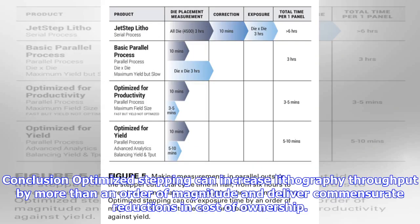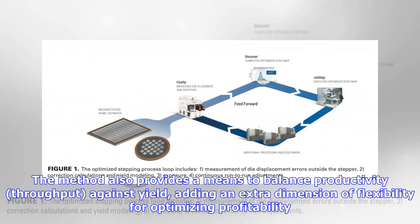Conclusion: optimized stepping can increase lithography throughput by more than an order of magnitude and deliver commensurate reductions in cost of ownership. The method also provides a means to balance productivity, throughput against yield, adding an extra dimension of flexibility for optimizing profitability.